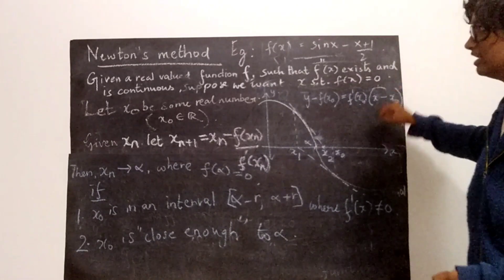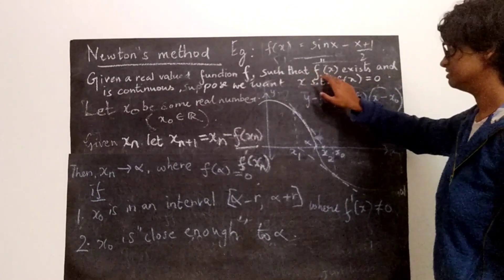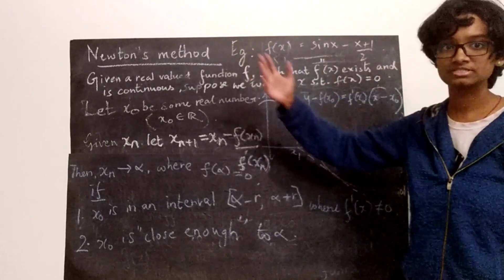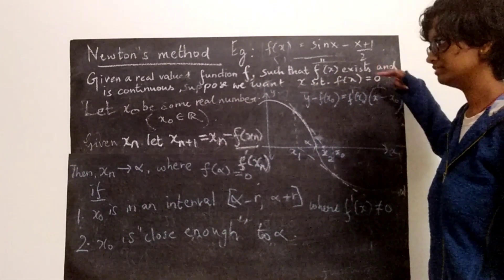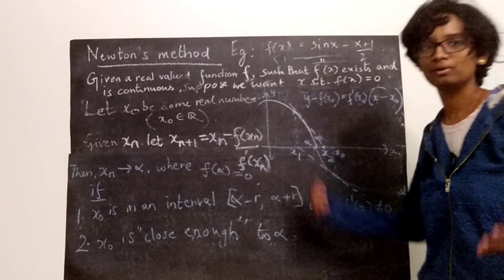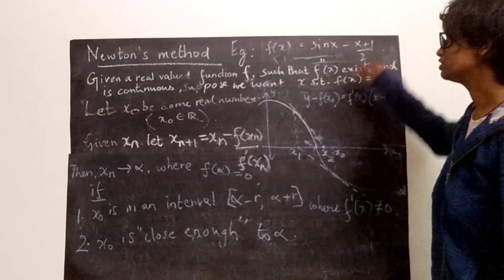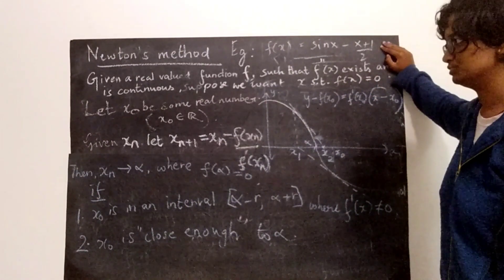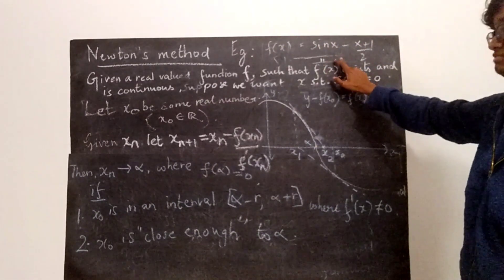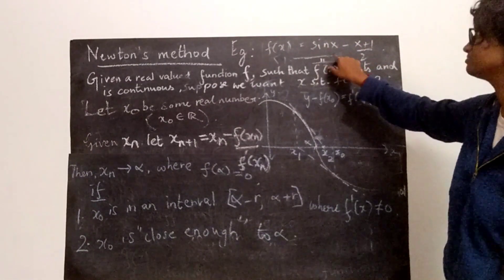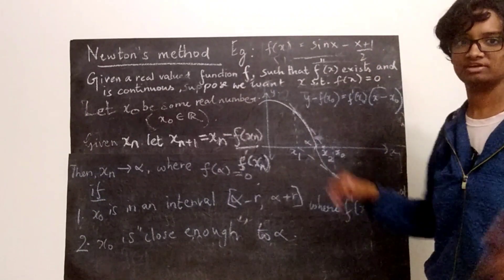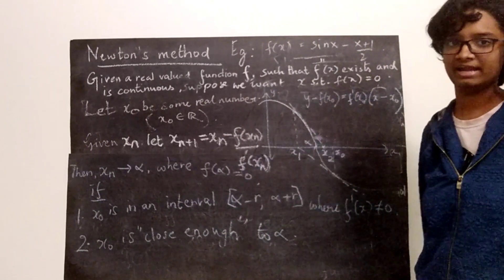Given a real-valued function f such that the second derivative of f exists and is continuous — if this is difficult to think about, you can think of f as a polynomial or a function involving trigonometric ratios and polynomial parts. For example, sin(x) minus (x+1)/2, or your favorite high-degree polynomial.